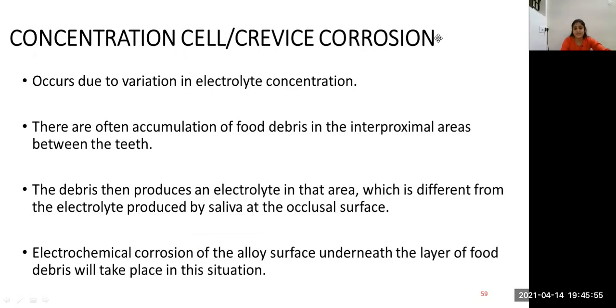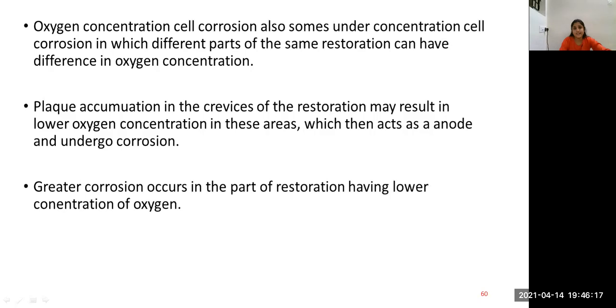Concentration cell or crevice corrosion occurs due to variation in ion concentration. There is often accumulation of food debris in the interproximal areas between the teeth. The debris then produces an electrolyte in that area which is different from the electrolyte produced by saliva on the occlusal surface. Electrochemical corrosion of the alloy surface underneath the layer of food debris will take place in this situation. Oxygen concentration cell corrosion also comes under concentration cell corrosion in which different parts of same restoration can have difference in oxygen concentration. Large accumulation of debris on the restoration may result in lower oxygen concentration in these areas which then acts as anode and undergoes corrosion. Greater corrosion occurs in the part of the restoration having lower concentration of oxygen.